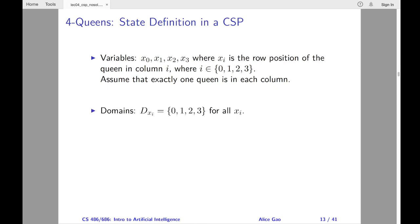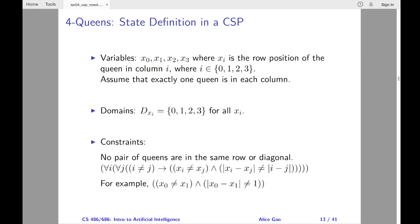The domain of each variable contains the four possible row positions. The constraints are: no two queens can be in the same row or in the same diagonal.